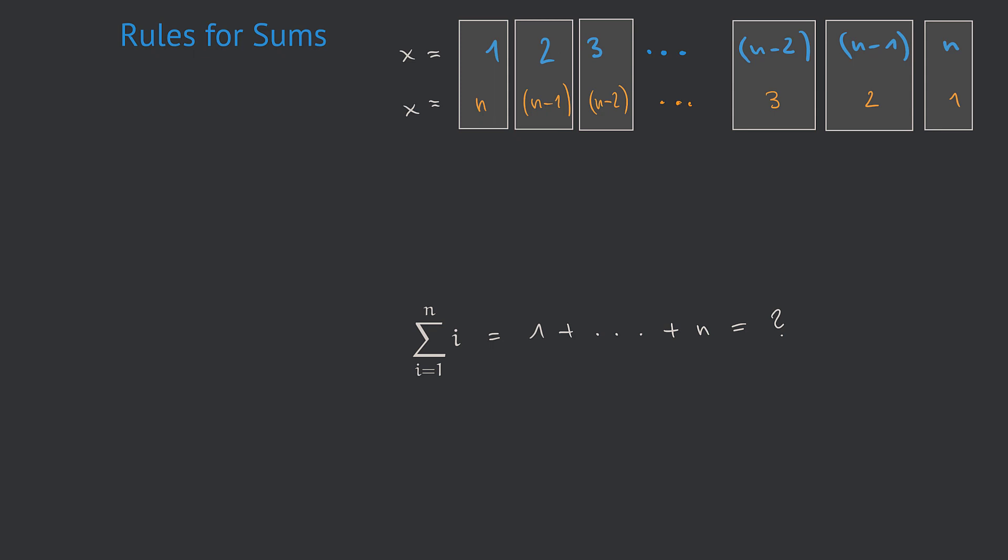That is of course the case for the first pair. But it is also the case for the second pair, because n minus 1 plus 2 is again n plus 1. And it's also true for the third one, because 3 plus n minus 2 is also n plus 1. And looking at the three last pairs, we also find that n minus 2 plus 3 also equals n plus 1, which finally also holds for the last two boxes.